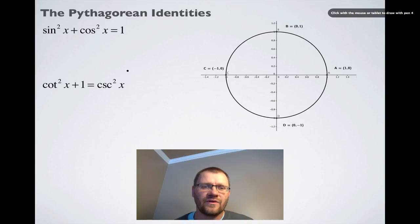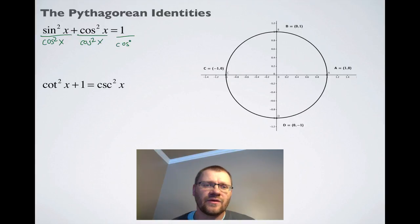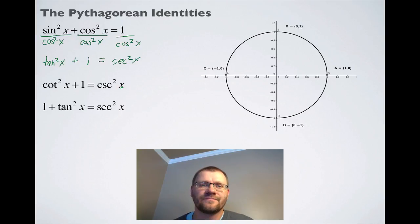The next identity we're going to find by dividing everything by cos squared x. When I divide each thing by cos squared x, I get sine squared over cos squared. Sine divided by cos is just tan, so sine squared over cos squared is tan squared. Cos squared divided by cos squared is just one. One over cos is secant, so one over cos squared is secant squared. And there is our next identity. Here are our Pythagorean identities.